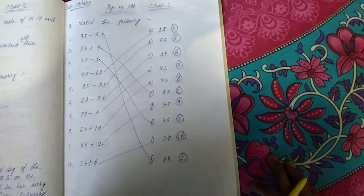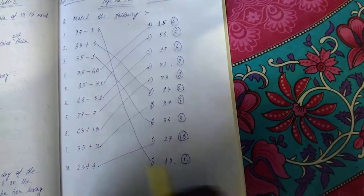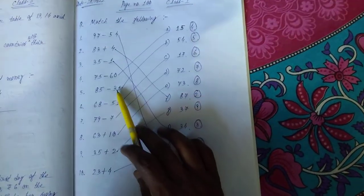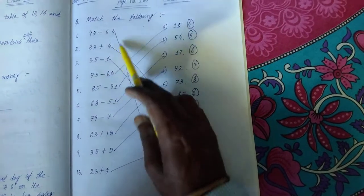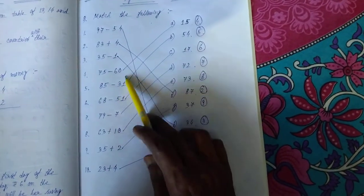Students, here you see page number 100. Match the following. Here the subtractions are given: 97 minus 54, 83 plus 4, subtraction and addition, 35 minus 1, 75 minus 60, 85 minus 31.